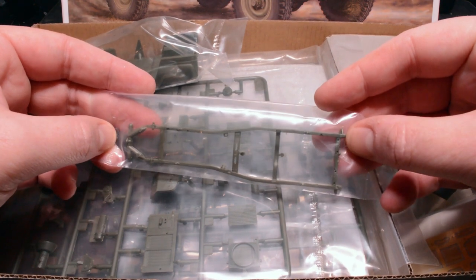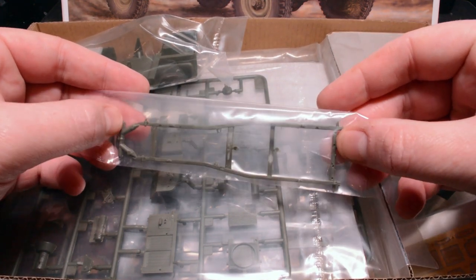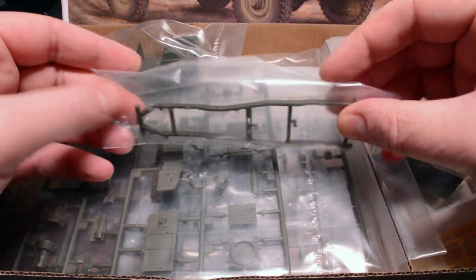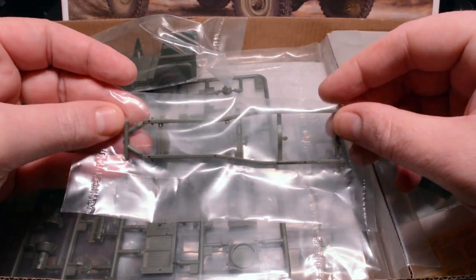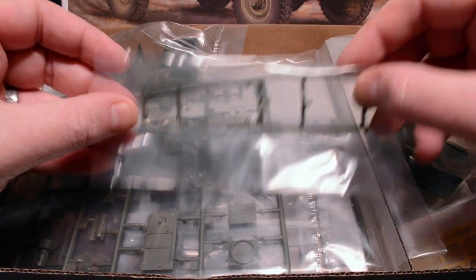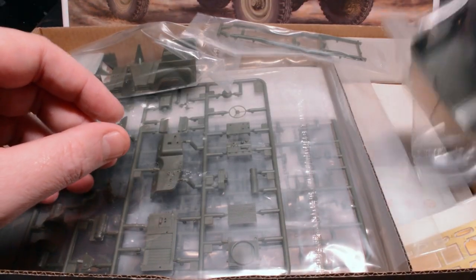With a little bit of relief, I found that the chassis was moulded in one piece. The GAZ-66 that I built for the Chernobyl video came with a multi-part chassis and you had to make sure that everything was really well aligned as any misalignment would follow through the rest of the build.